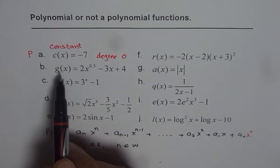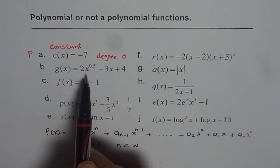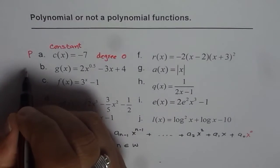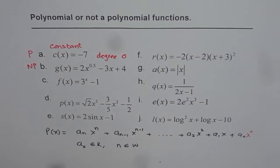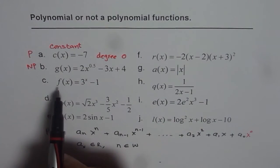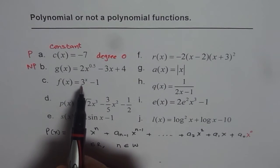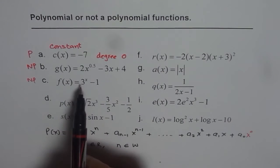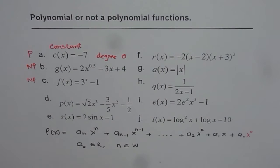B is g of x equals to 2 times x to the power of 0.5. Now 0.5 is not a whole number. Therefore it is not a polynomial. Then we have c, which is f of x equals to 3 to the power of x minus 1. That is an exponential function. It is not a polynomial. The exponent has to be a whole number. It cannot be a variable. Exponential functions have horizontal asymptotes. Polynomials do not have horizontal asymptotes.